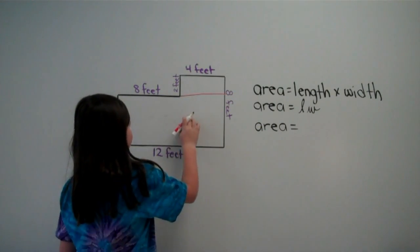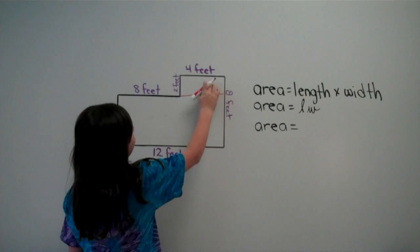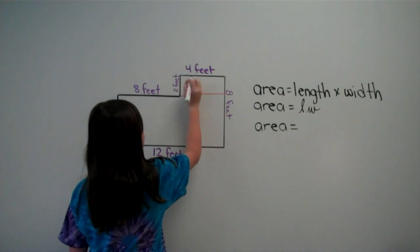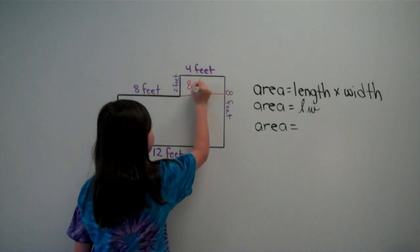Then you would multiply the length, which is 4 feet, and the width, which is 2 feet. 4 times 2 equals 8 square feet.